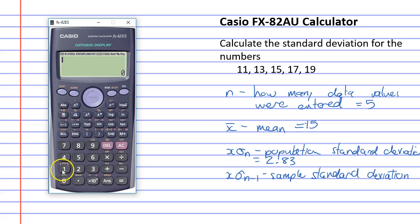Now, shift 1, 5. And we want the sample standard deviation option 4. And that gives us 3.16.